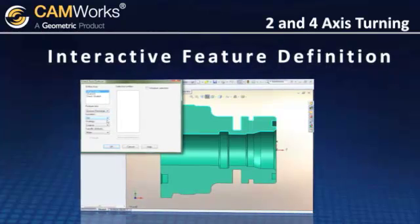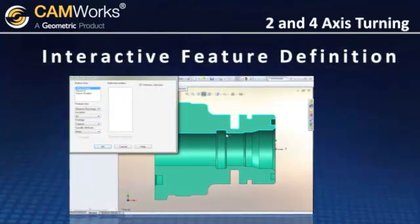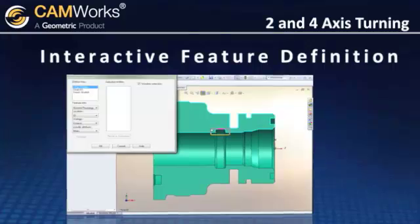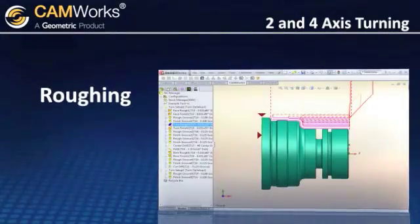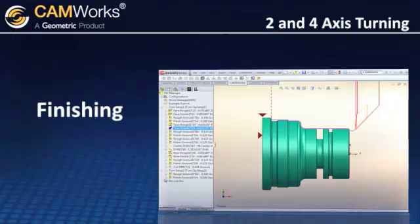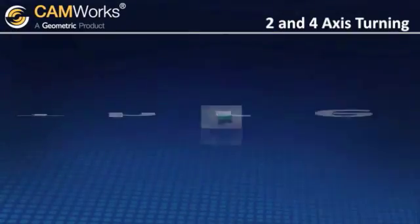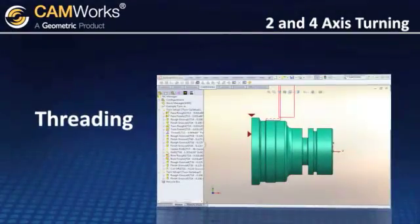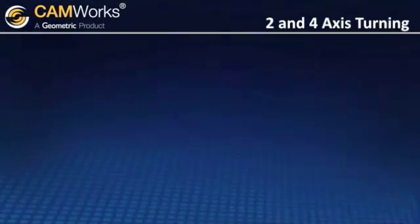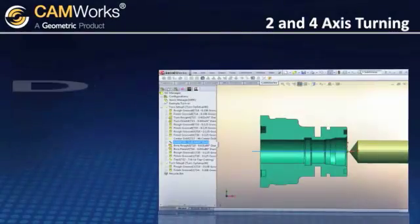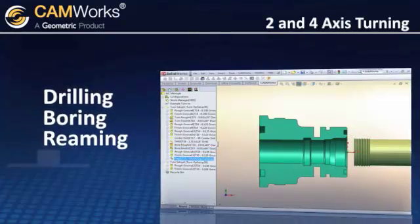This interactive approach gives you total control over the features you want to machine. 2- and 4-axis turning also includes automatic roughing, finishing, grooving, threading, cut-off, and single-point cycles such as drilling, boring, reaming, and tapping.